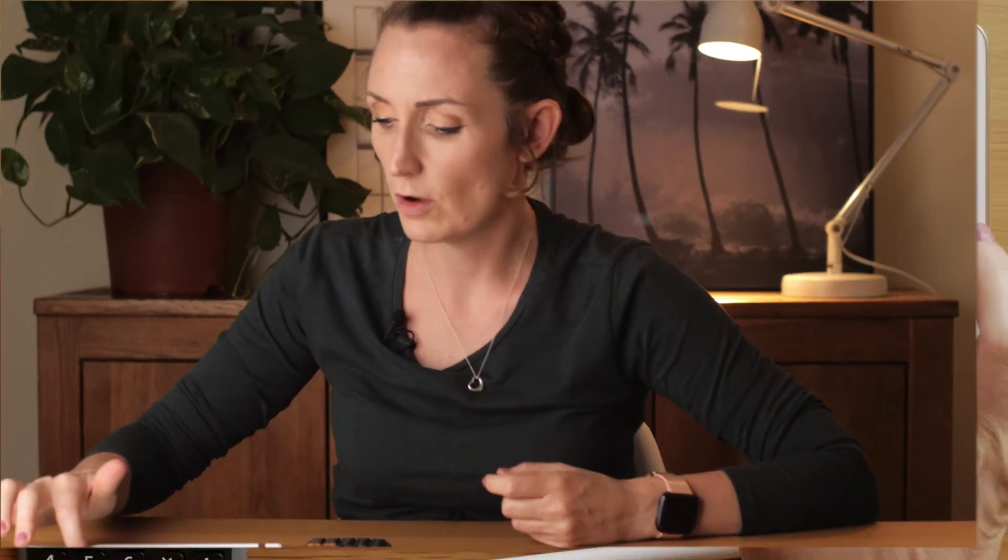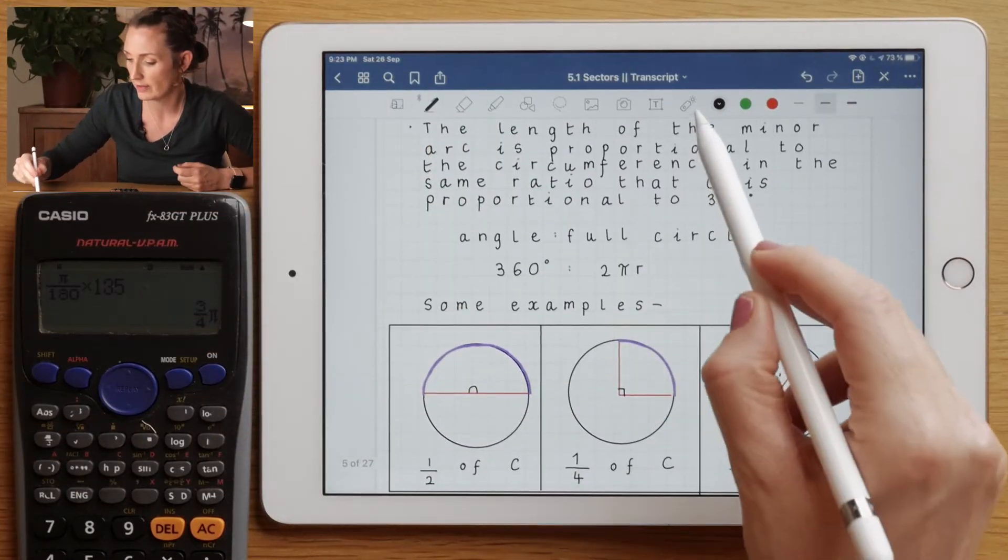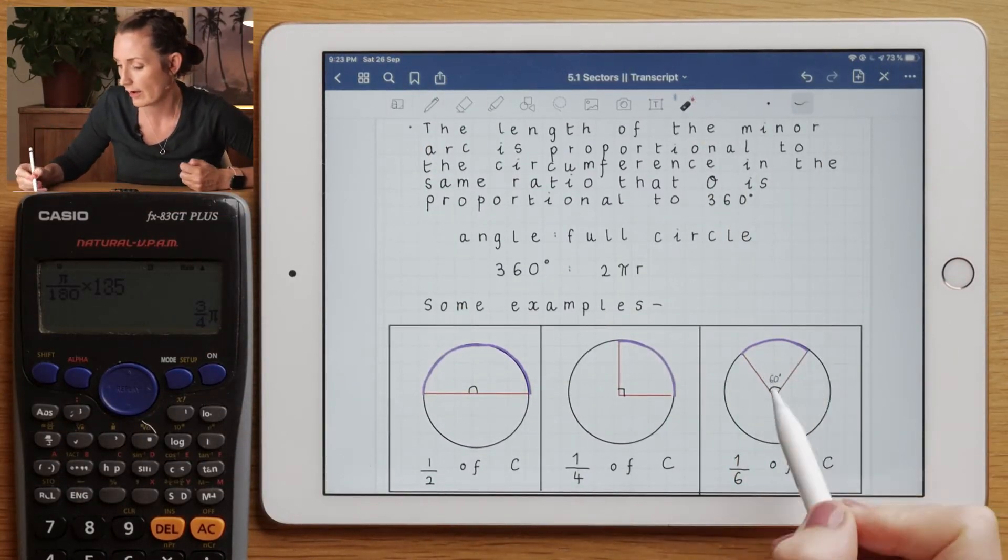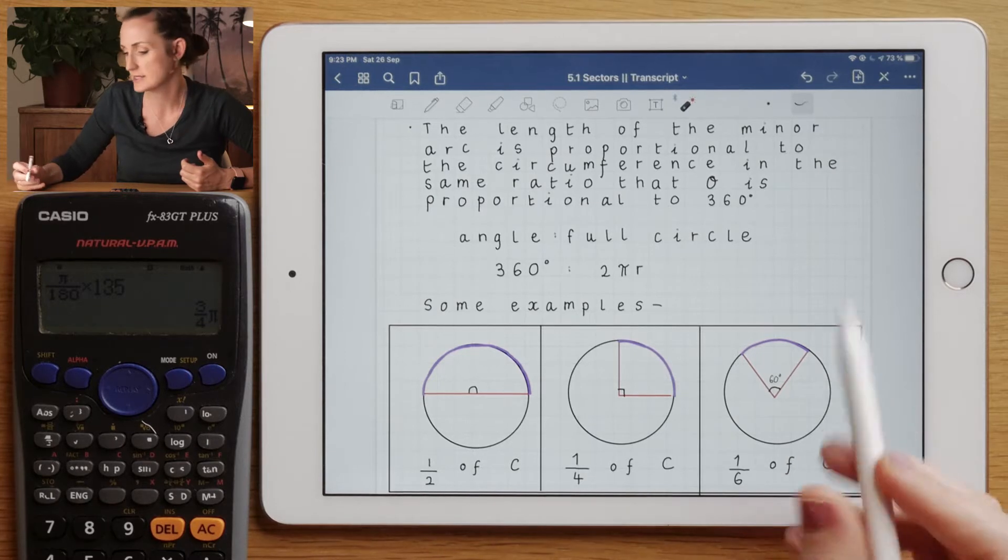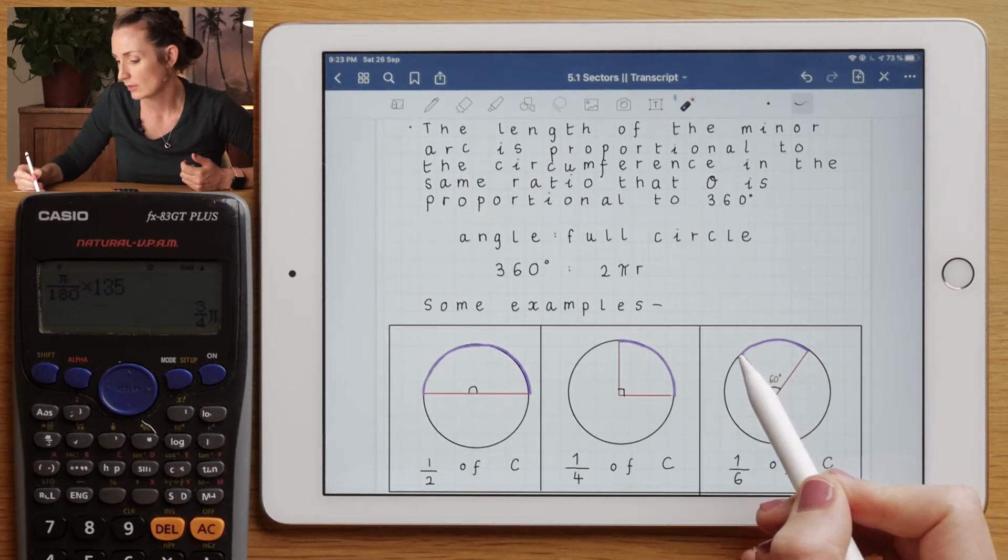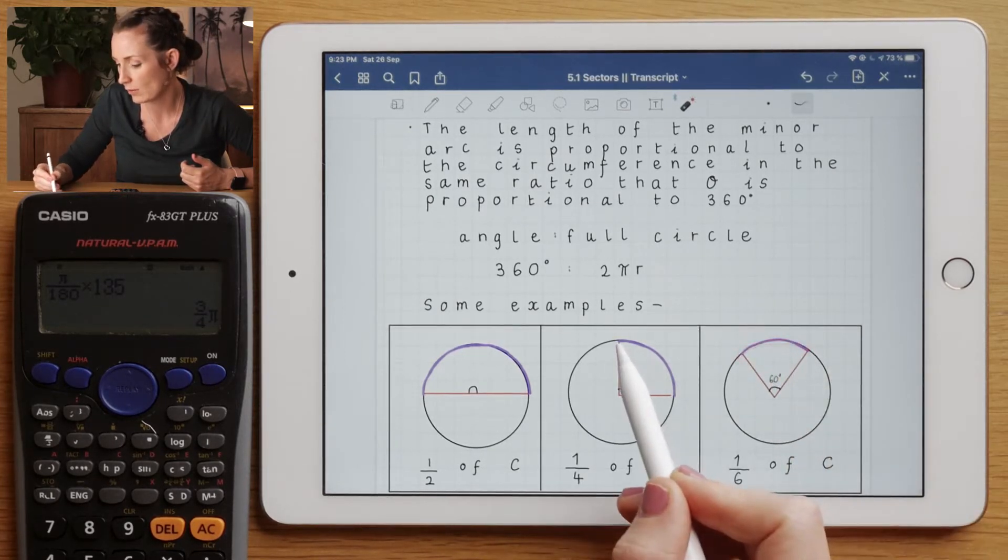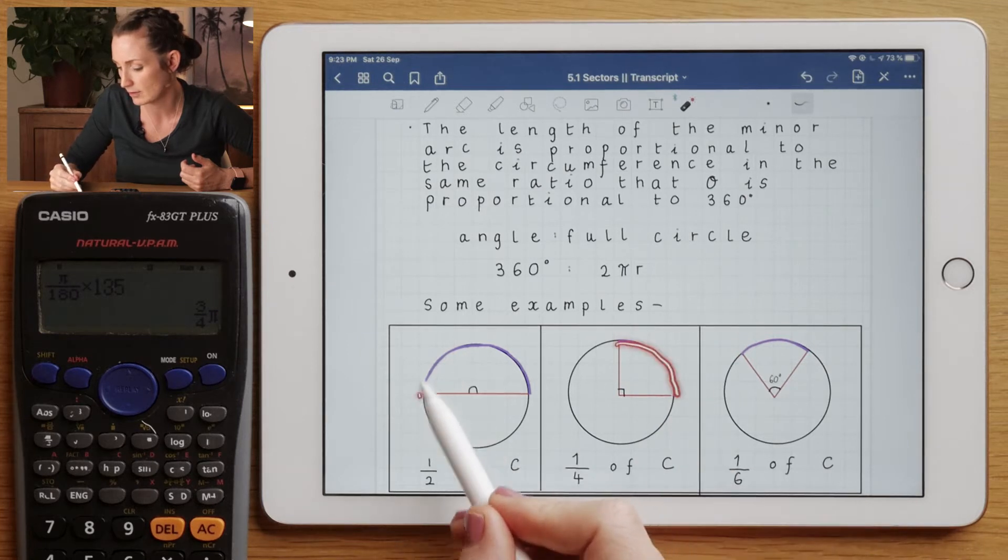Hi, we're going to be looking at where the formula for arc length comes from. If you're not sure what arc length is, imagine that you've cut a slice out of your circle like a slice of pizza. The arc length would be how long is the piece of crust on your pizza.